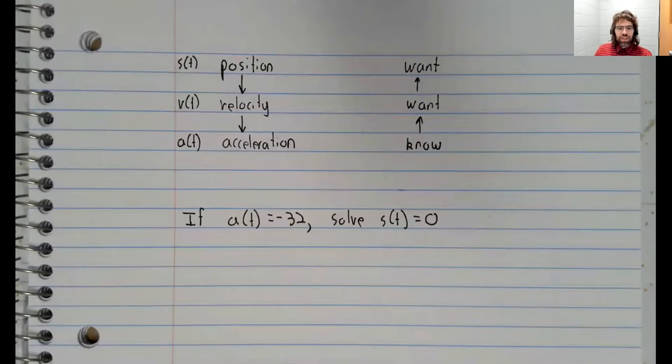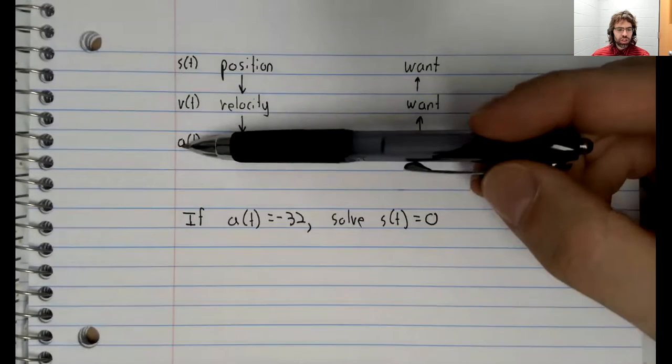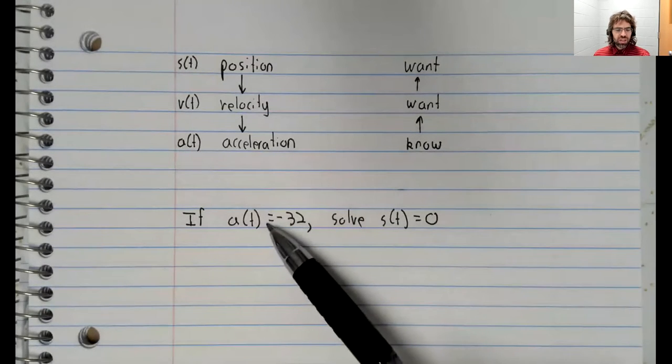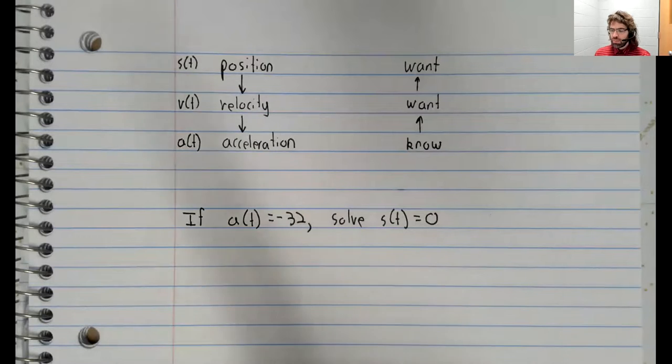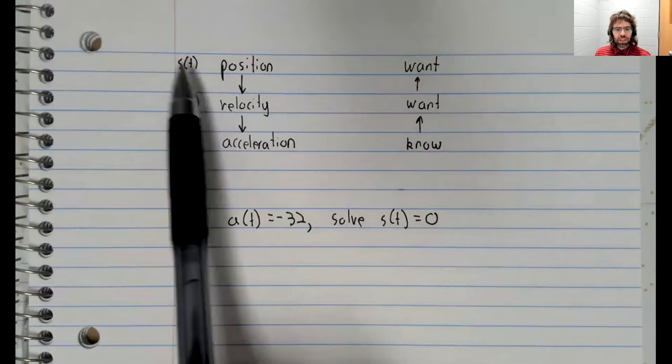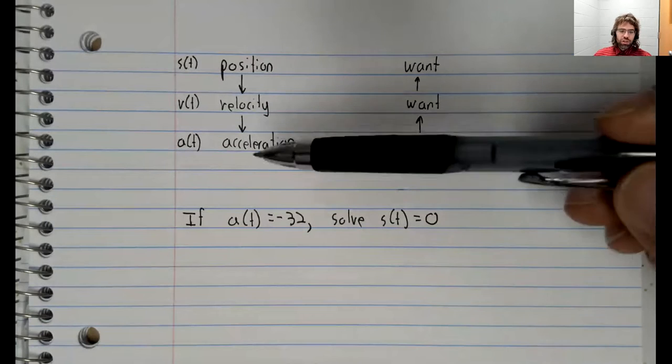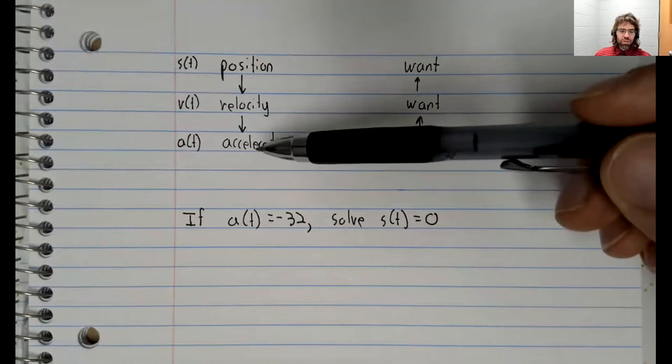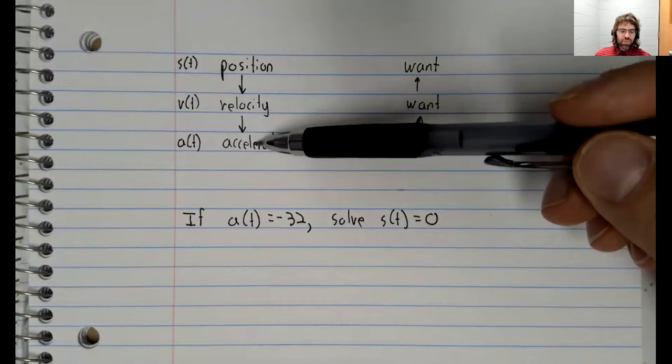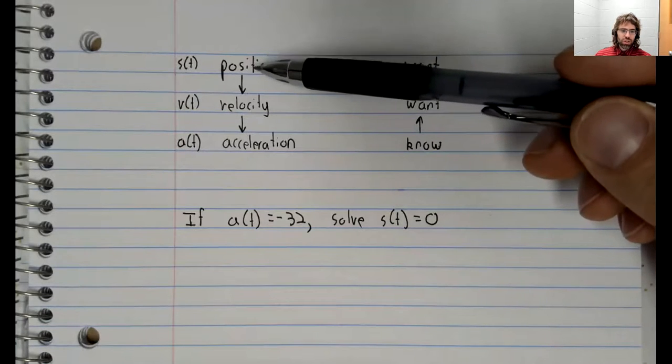So here's that question reframed in terms of these functions. Given this acceleration function, when is s of t, the height, equal to zero? So you see we're trying to take information about the acceleration and go up this chart to the position.